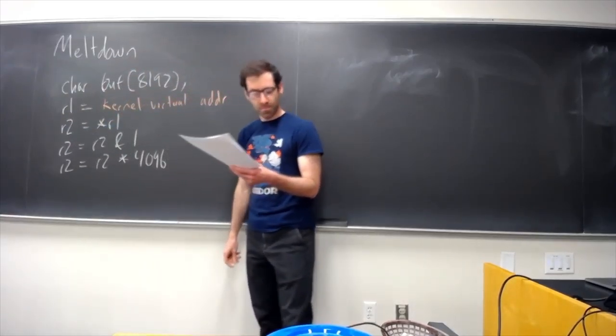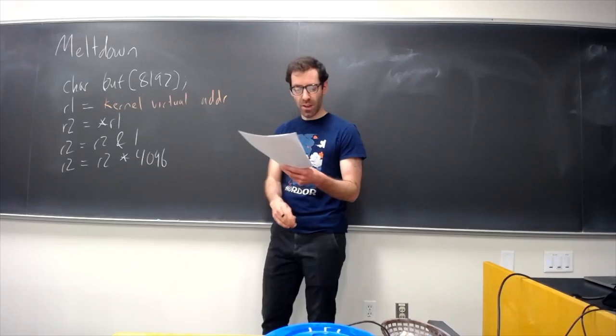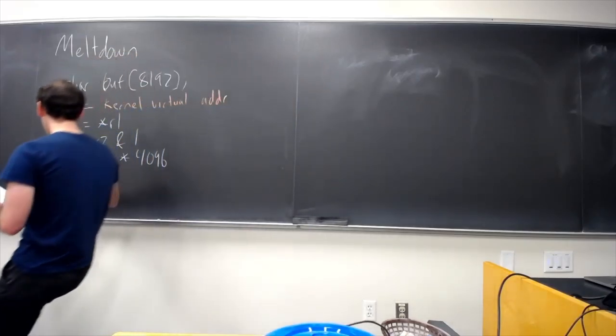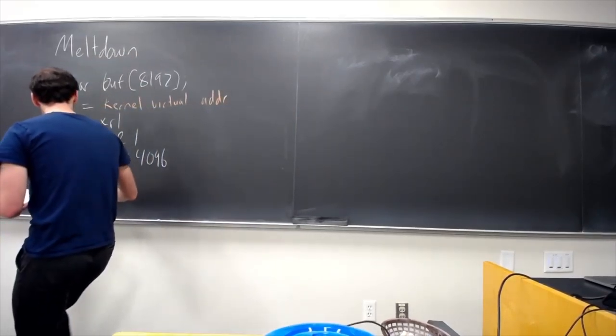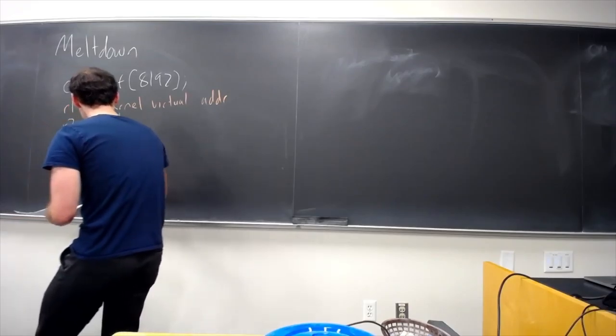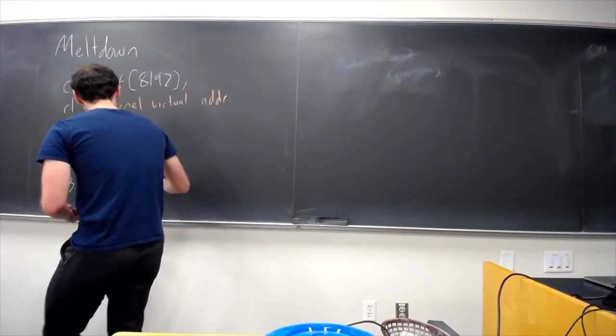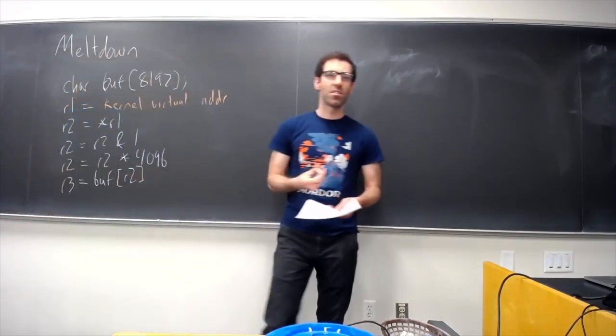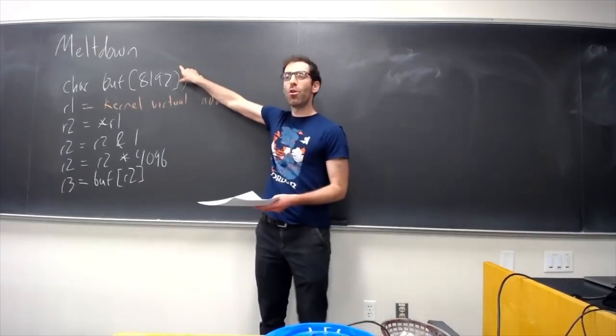We kind of isolate the least significant bit of whatever we read from kernel memory. We multiply it by say the size of a page, and then we use that as an index into our own memory.